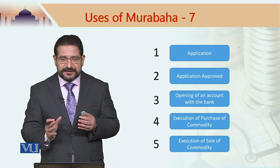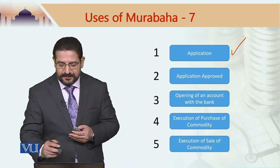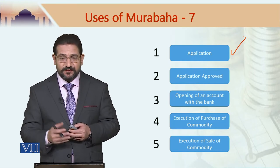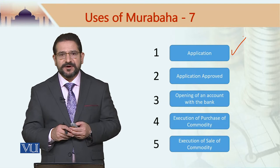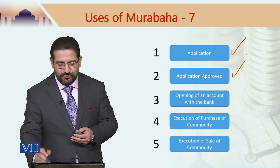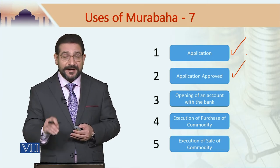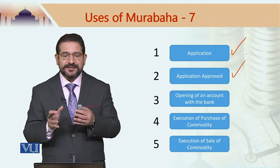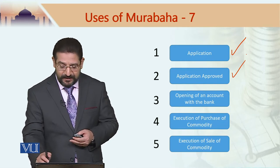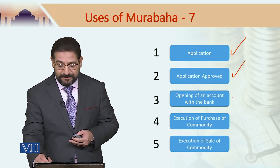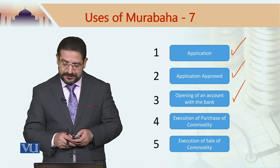In the case of Tawarrukh, a number of steps are involved. The first step, like any other product, is making the application. When I need cash, I go to an Islamic bank and fill in the application form to get this personal finance facility. If my application is approved, I would be offered this facility. The bank may ask me to open an account, as having an account with the same bank helps execute the whole thing more efficiently. If I am not already an account holder, I would be asked to open one and fill in the account opening application form.